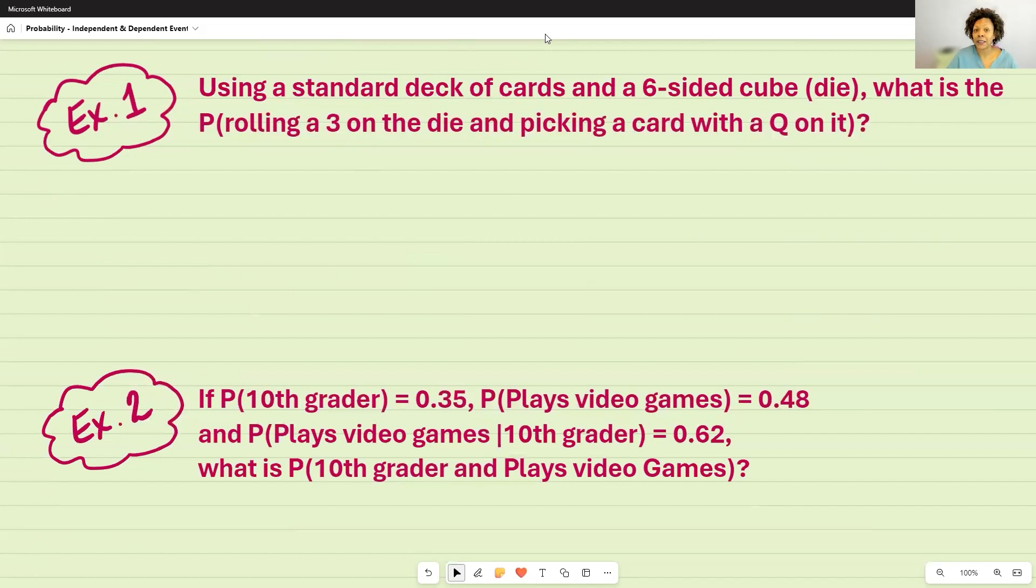So what is the probability of rolling a three on the die, and, and is that keyword that tells me I'm going to multiply, picking a card with a Q on it. So two things are happening here. I'm going to roll the die, and what's the probability of picking a three? Well, there's only one three on the die, so it's one out of six, because it's a six-sided die.